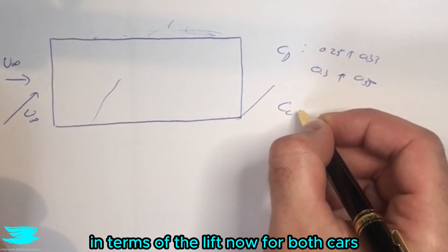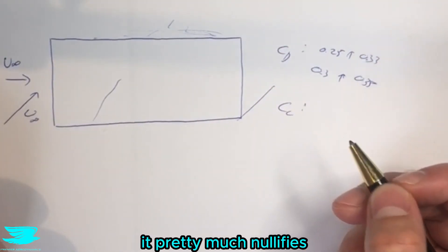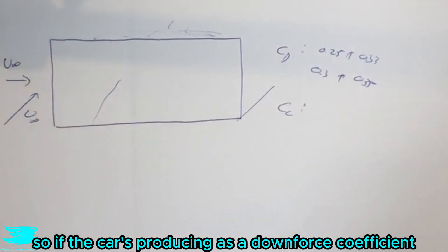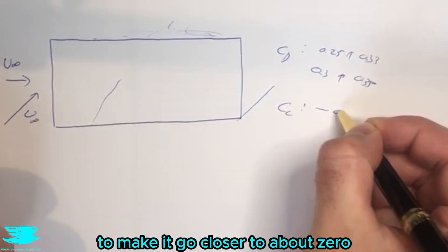In terms of the lift, now for both cars, both fastbacks and squarebacks, it pretty much nullifies any downforce that you're going to be getting. So if a car is producing downforce from maybe 0.1, that's going to nullify to make it go closer to about zero.